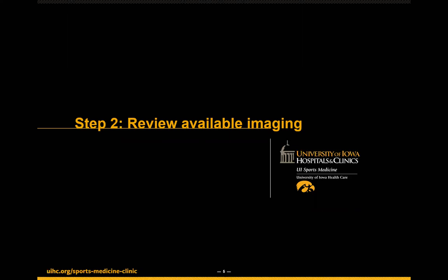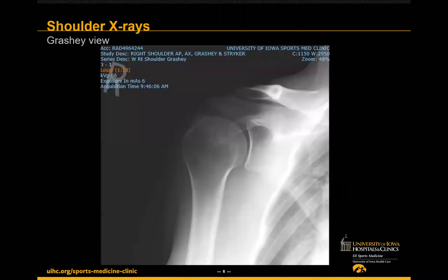Step two is review available imaging — a really important step that can get missed when people get excited to go do the ultrasound. Doug brought this up last time: if you have radiographs, get them and review them. It can save you a ton of time on the front end if you go in with your eyes open to what's already been done. In this case we have shoulder x-rays, and we can see there is indeed a calcification. You start to develop your differential diagnosis based on these radiographs. We can see this somewhat amorphous larger calcification, likely in the supraspinatus.